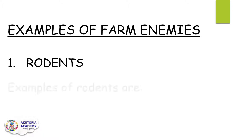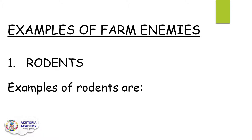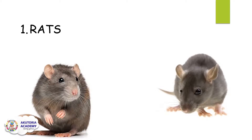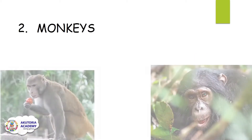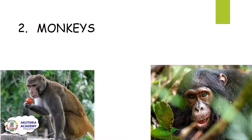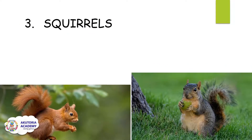large sharp properties that attack our crops. Examples of rodents are: number one, rat; number two, monkeys; number three, squirrel.